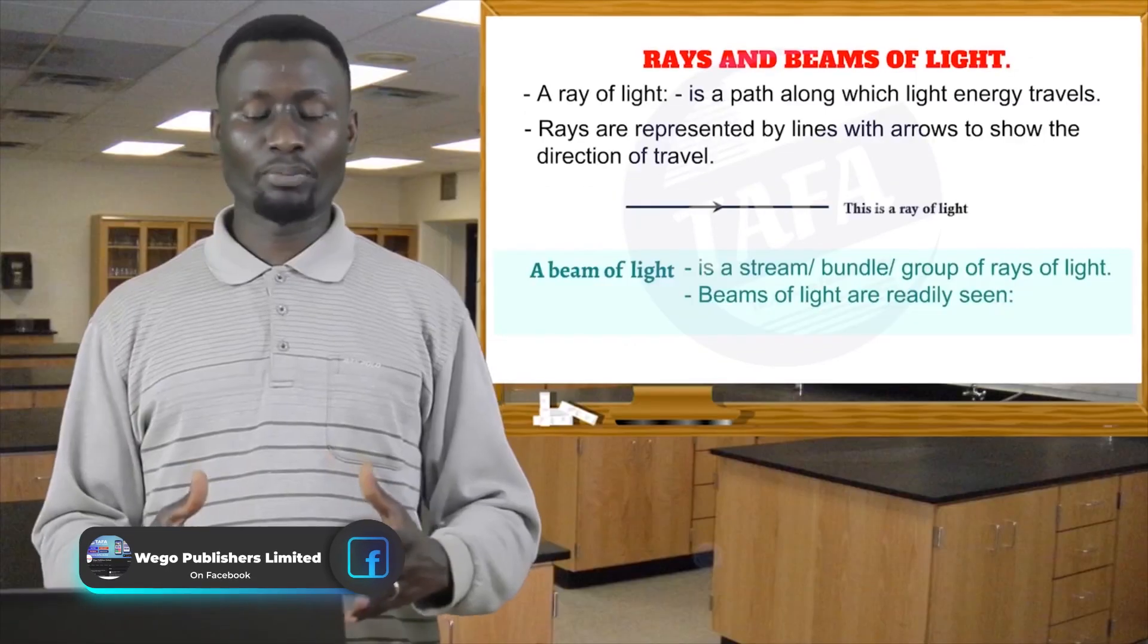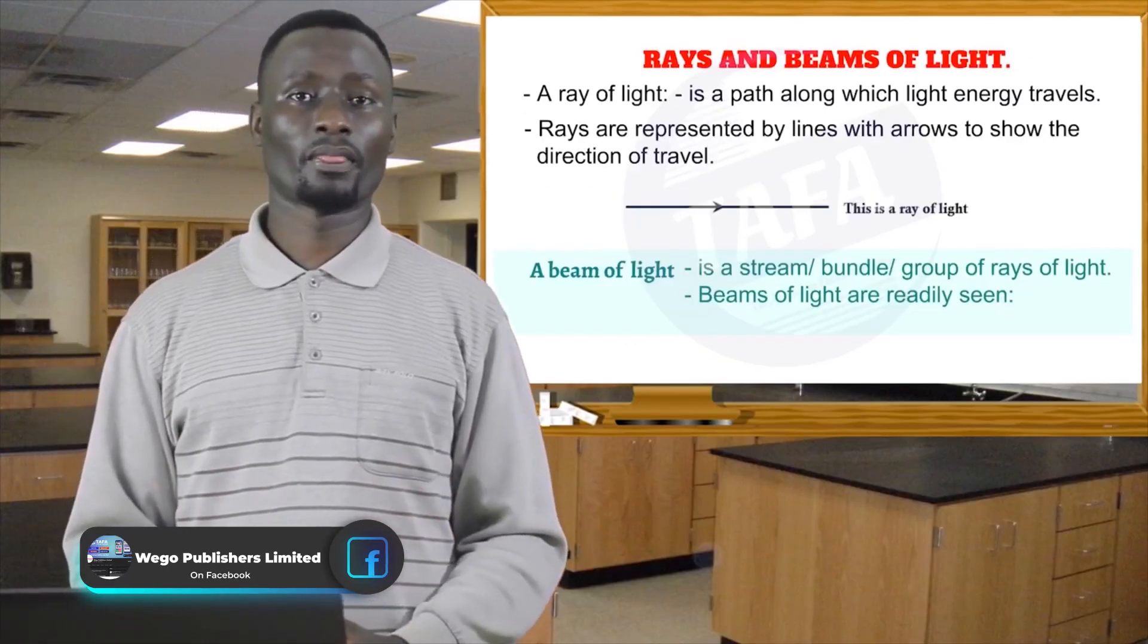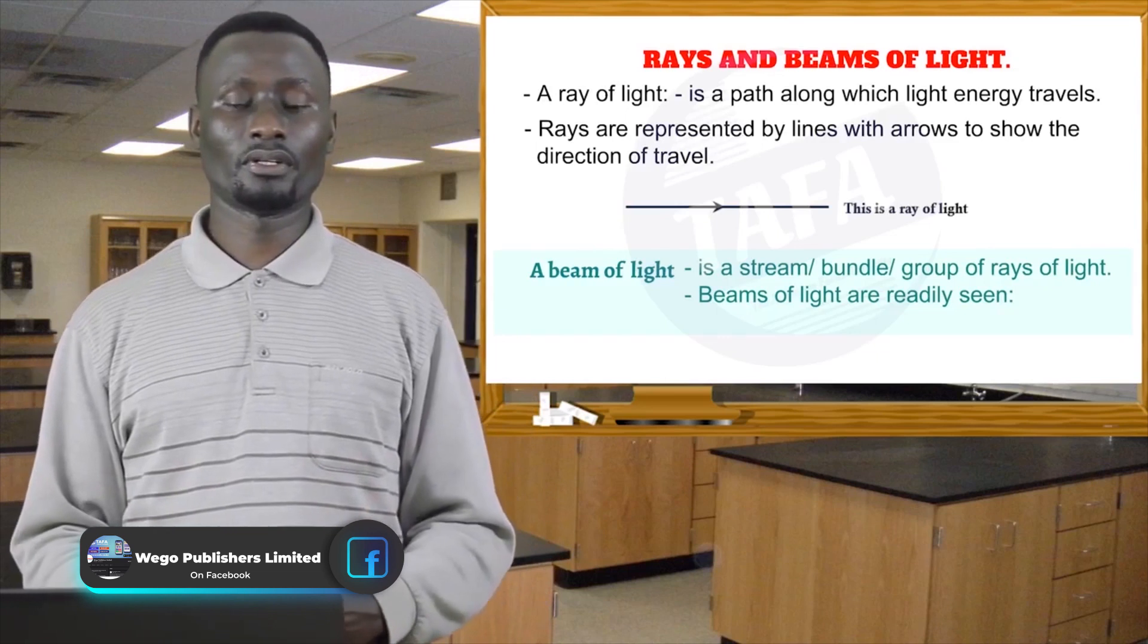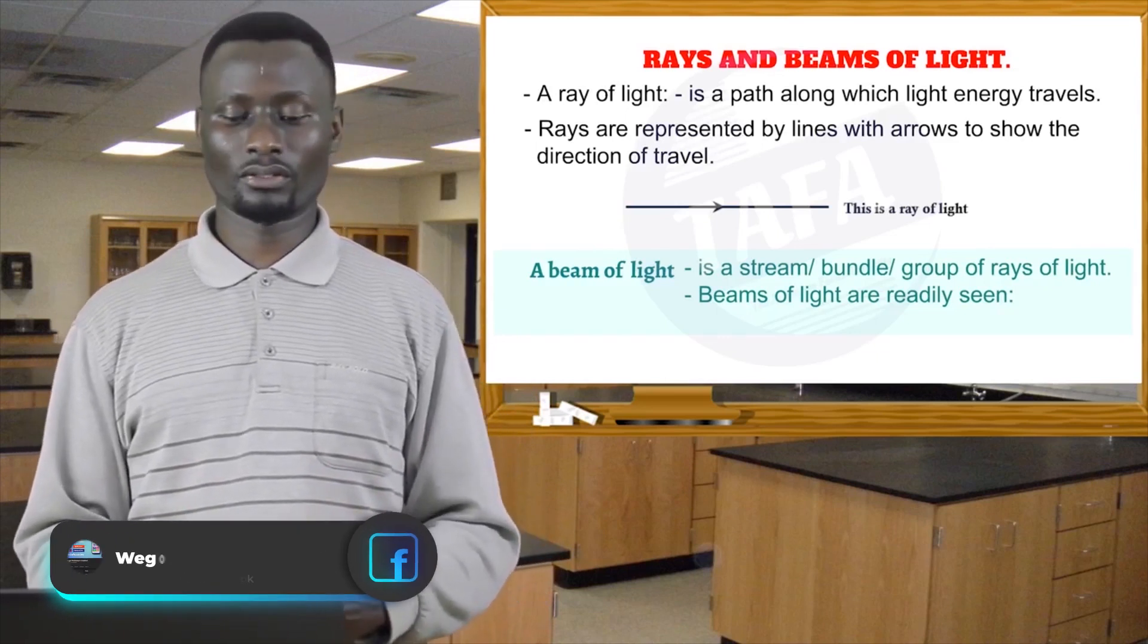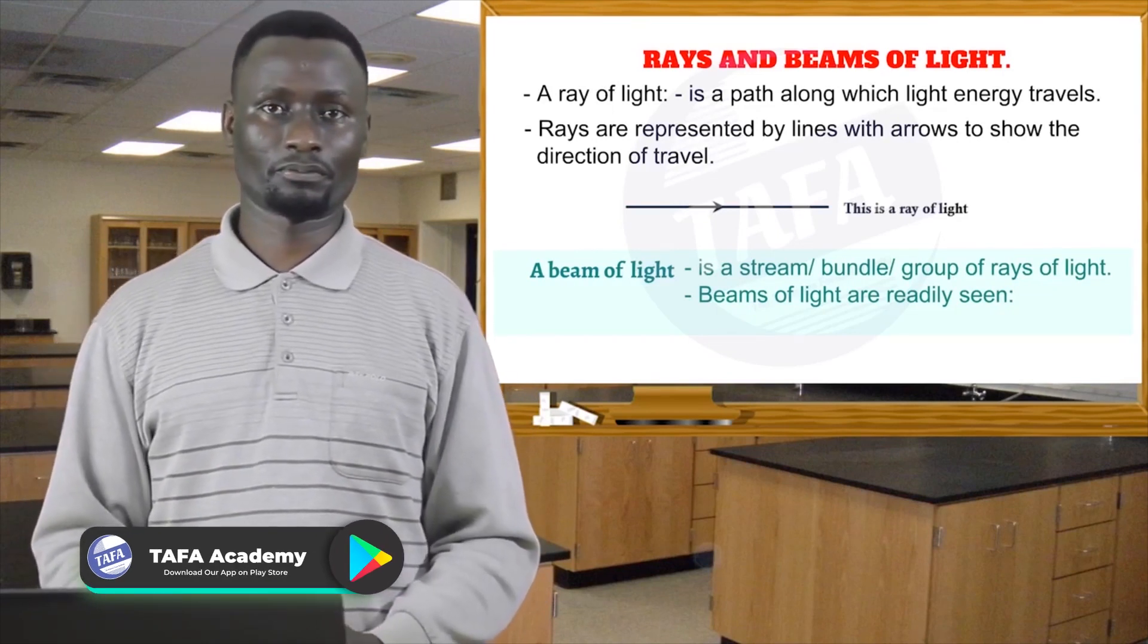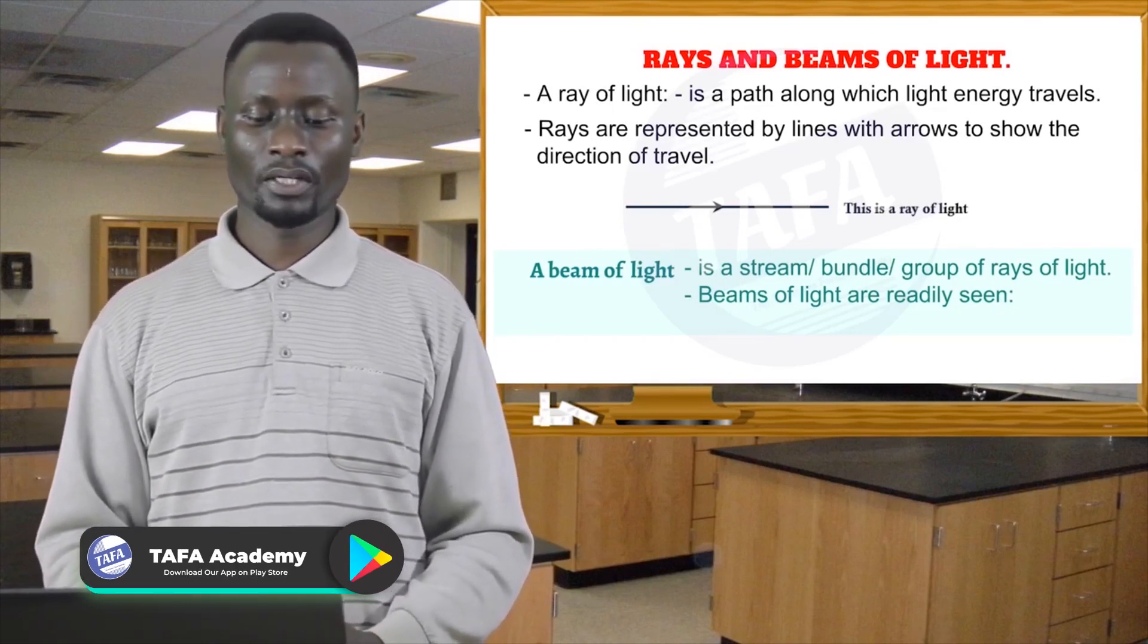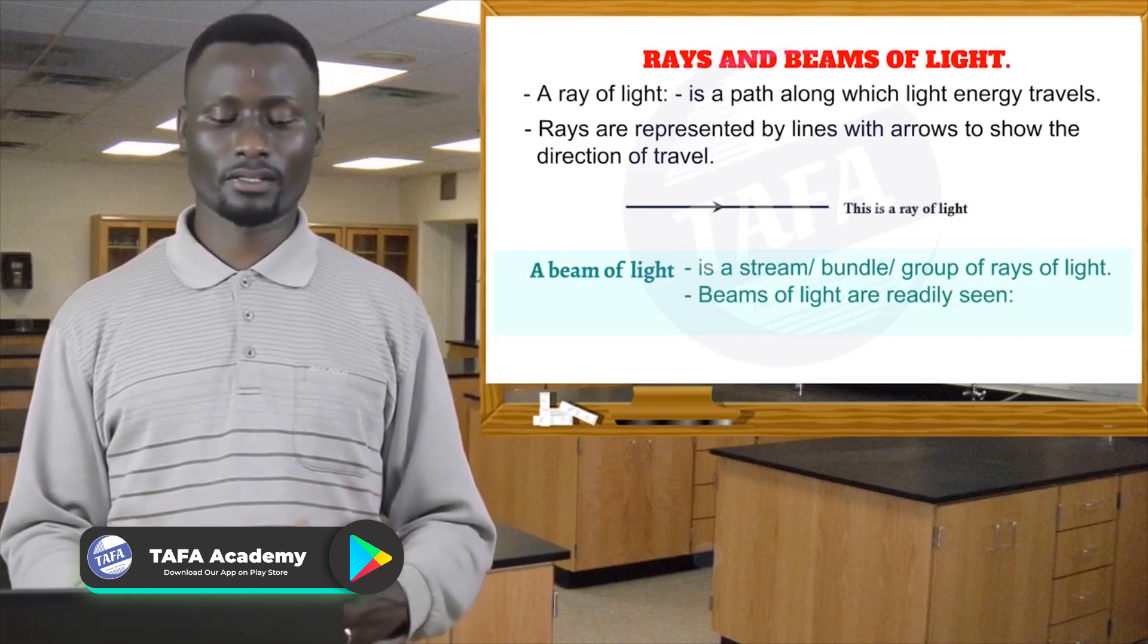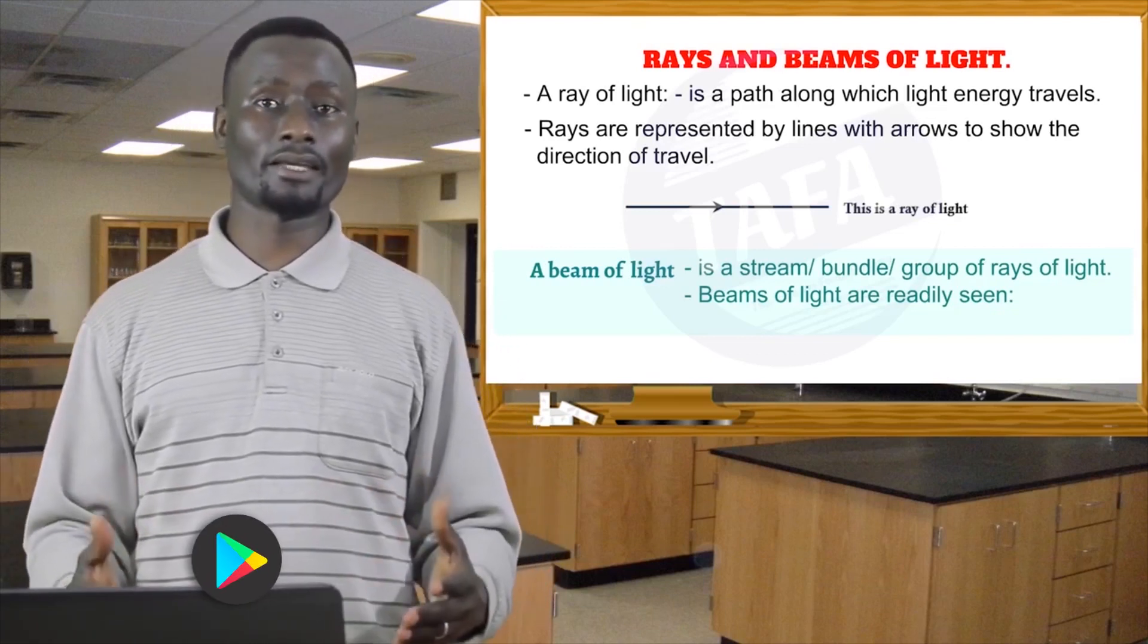A beam of light is a stream or bundle or group of rays of light. Beams of light are readily seen: